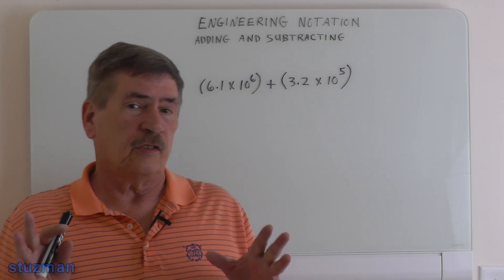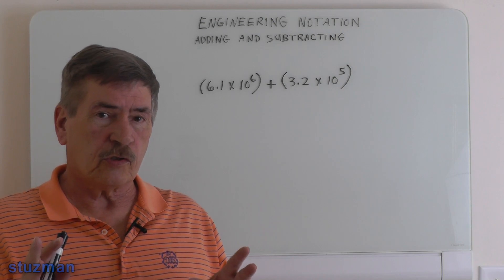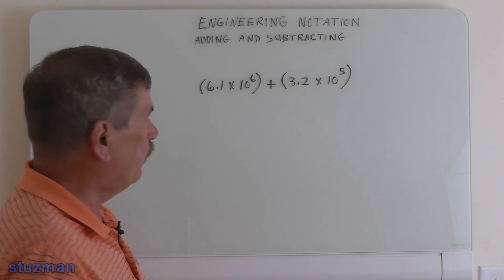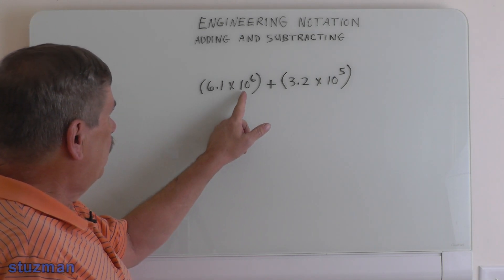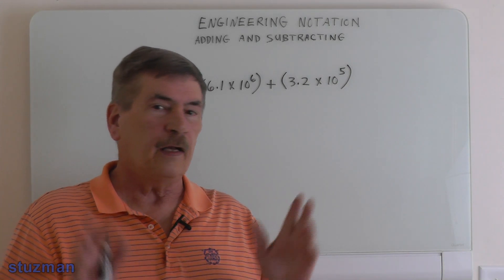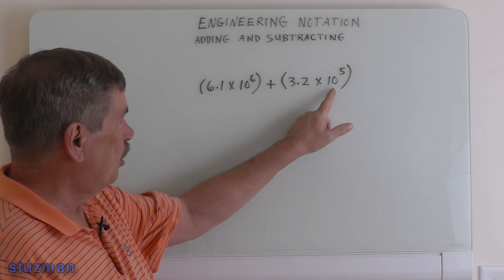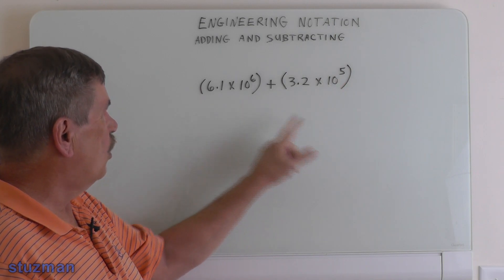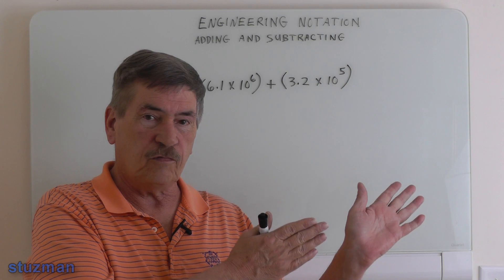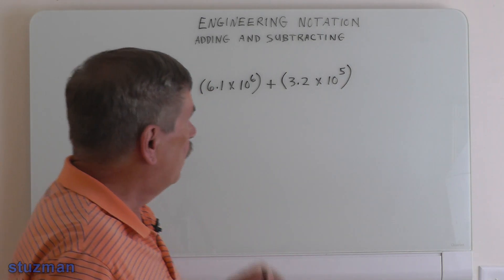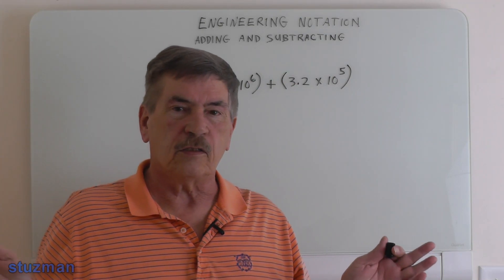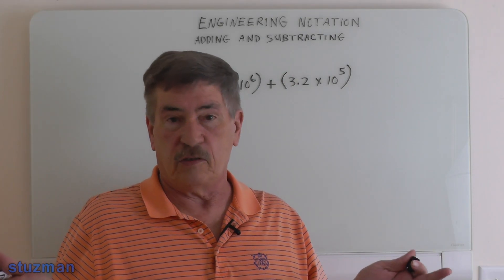Here's an example where the exponents do not match. We have one number with a power of 10 to the 6 and another with 10 to the 5th. Now we can work on either one — we can make the 10 to the 5th go up to 10 to the 6th, or we can bring the 10 to the 6th down to match 10 to the 5th. It doesn't matter; you'll get the same answer. We're going to do it both ways.